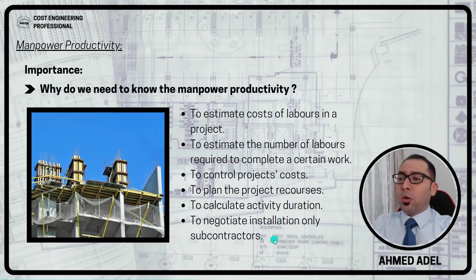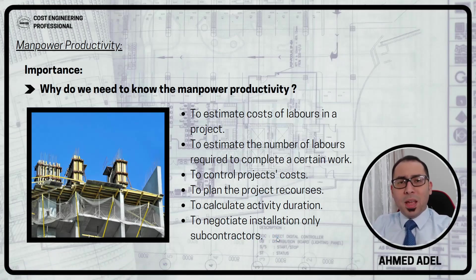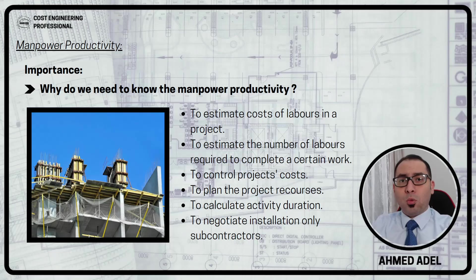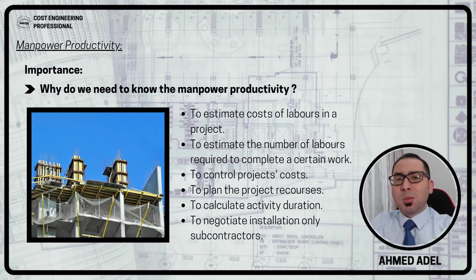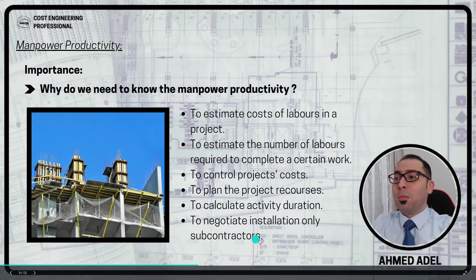Also to negotiate with installation-only subcontractors. If I know the cost of manpower per day and I know their productivity per day, I actually know the cost of the activity per day — for example, one square meter of tile fixing. When I try to hire installation subcontractors, I can negotiate: I can tell them their approximate productivity is this much and their approximate cost per labor is this much, so why are you charging me so much for this activity?